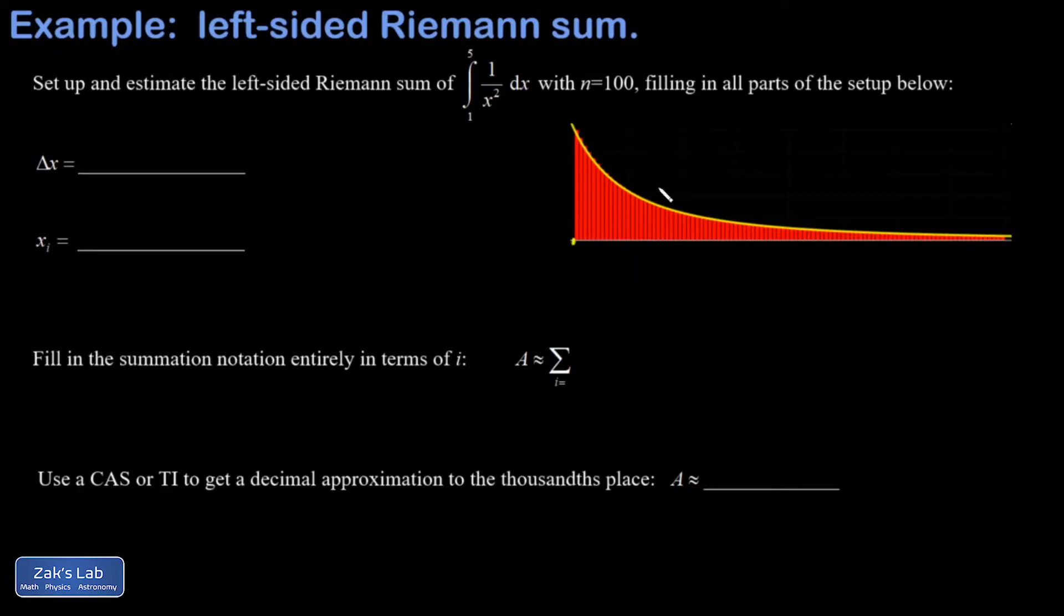So this is actually a picture of all 100 slices. And again, we're going from x equals 1 all the way to x equals 5.